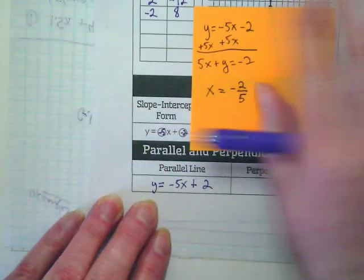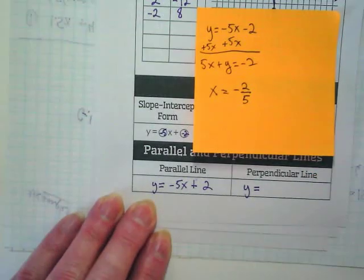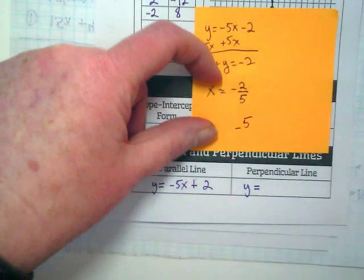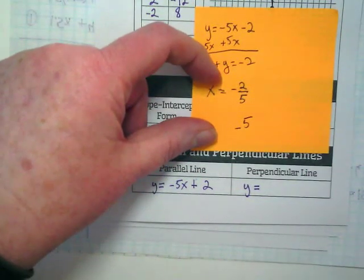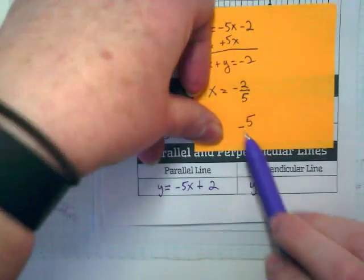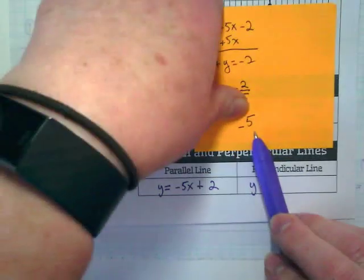Okay, and I'm going to use my sticky to do the perpendicular. It's going to be y is equal to... I have to find the opposite reciprocal of negative 5. What's the opposite of negative? And what's the reciprocal of 5?